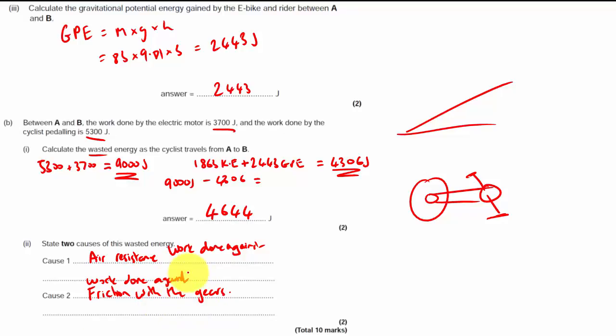So this cyclist plus their electric motor did 9,000 joules of work. 4,000 joules of that, well, 1,863 joules were converted into kinetic energy. 2,443 joules were converted into gravitational potential energy. And another 4,644 joules were converted into work done against air resistance and work done against friction with the gears. That's why they should be riding a recumbent.